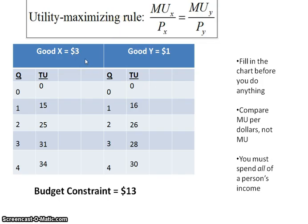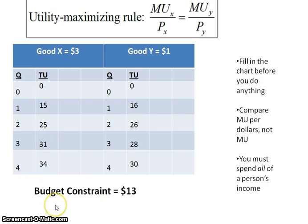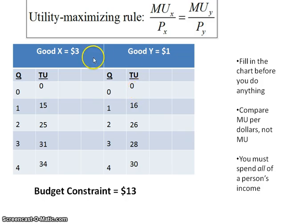When confronted with these types of problems, you'll be told the price of each good and given the quantities and total utilities. There's also a budget constraint, which represents the person's income. One of the rules is that you always have to spend all of your income — so not only do the ratios need to equal one another, but the quantities purchased at those prices must also equal the budget constraint, which in this case is $13.